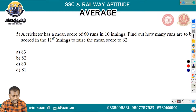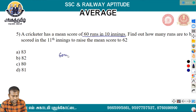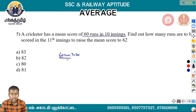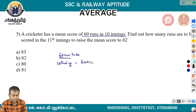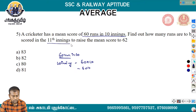A cricketer has a mean score of 60 runs in 10 innings. In 10 innings the total is 60 into 10, which equals 600. Find out how many runs are to be scored in the 11th innings to raise the mean score to 62.